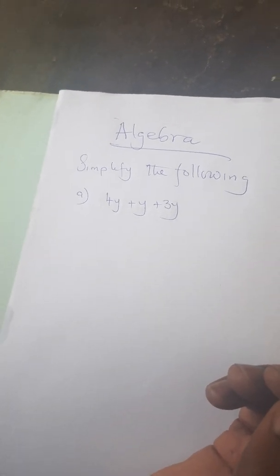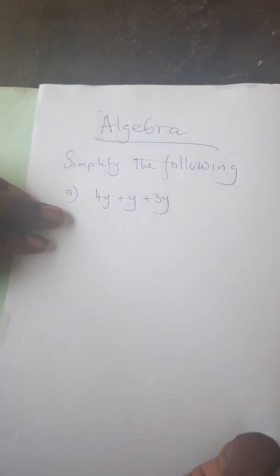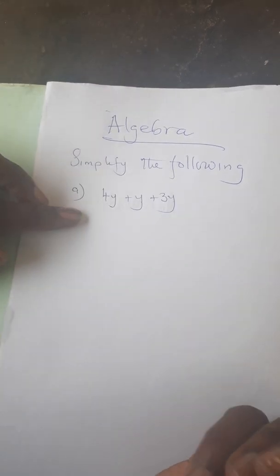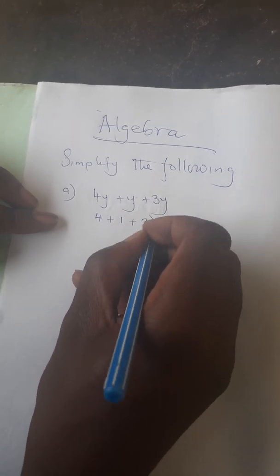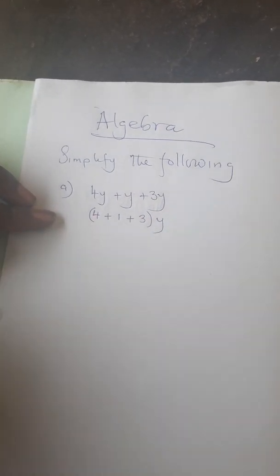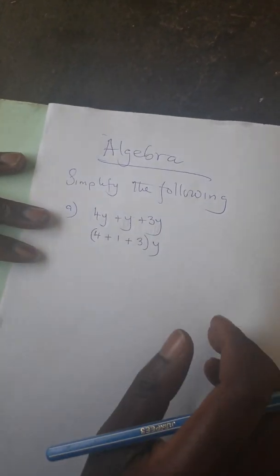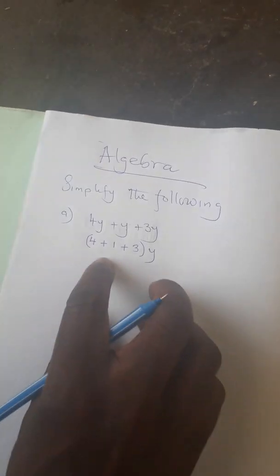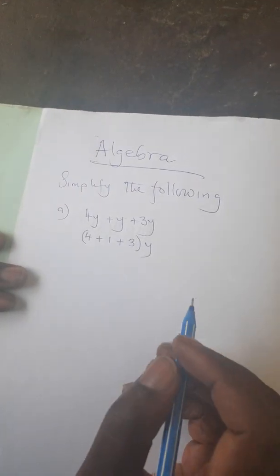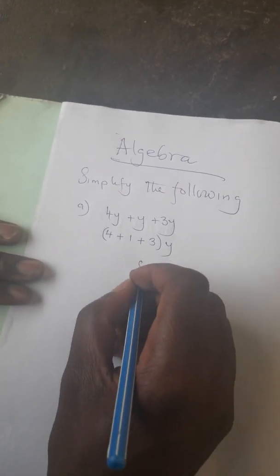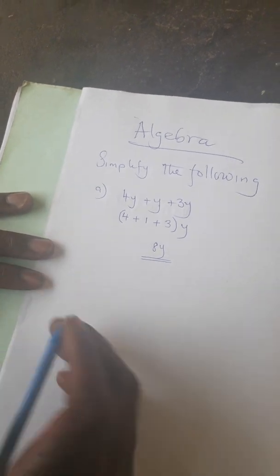Algebra is closely related with integers. So here we are simply asking: what is the coefficient of y? For the first term it's 4, the second one the coefficient is 1, and the third one the coefficient is 3. We can put our y outside, then work with these digits in the brackets — we add them. When we add them you discover we get 8, then we bring the y. So our answer is going to be 8y.